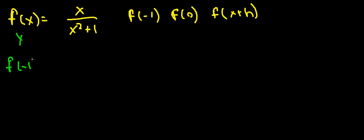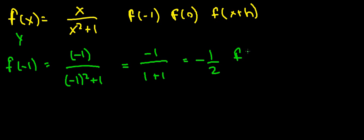So let's do f of minus 1 first. That is equal to minus 1 over minus 1 squared plus 1, which is equal to minus 1 over 1 plus 1, which is equal to negative 1 half. So f of minus 1 is equal to negative 1 half.